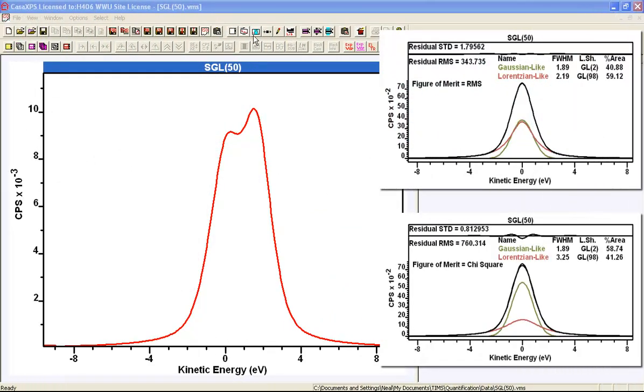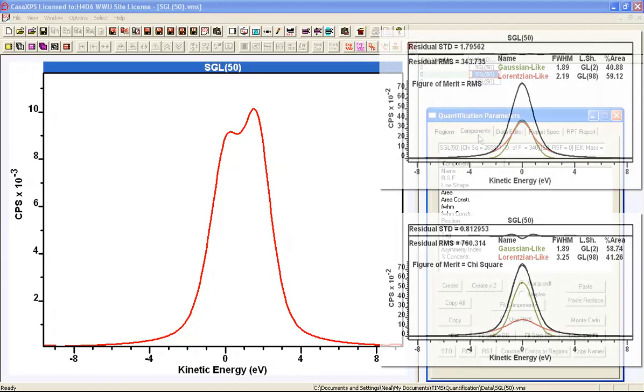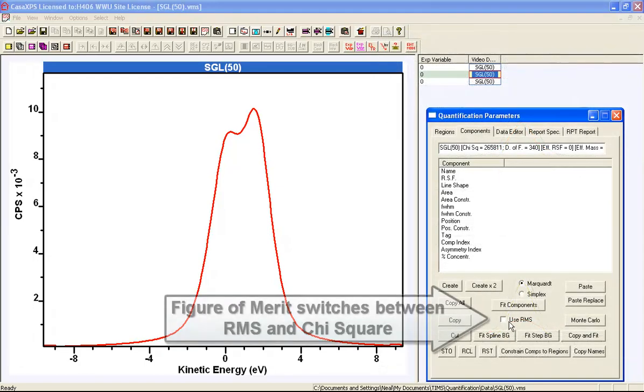In this video we're going to look at the relationship between a peak model and the figure of merit used to fit peaks to data. On the component property page there's a tick box that says use RMS, and when ticked it'll use the RMS and when unticked it'll use chi-square.